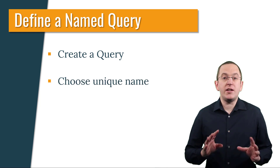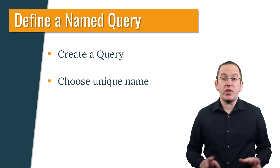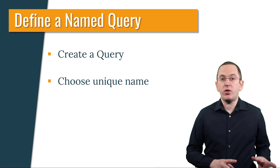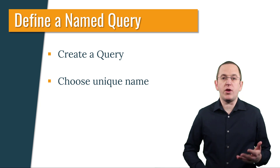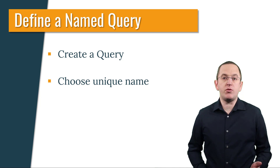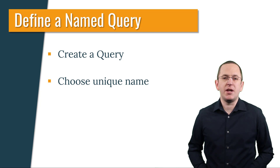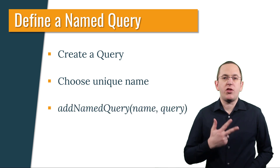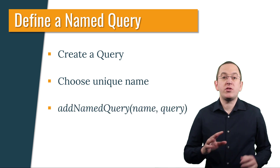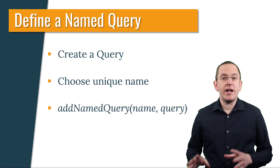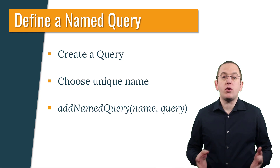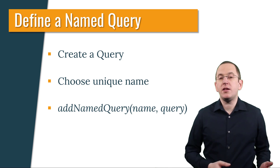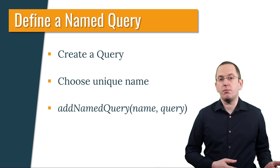Second, find a name for your query that is unique within your persistence unit. If there is already a named query defined for that name, the query will be updated. And third, use the query and name to call the addNamedQuery method on the EntityManagerFactory.